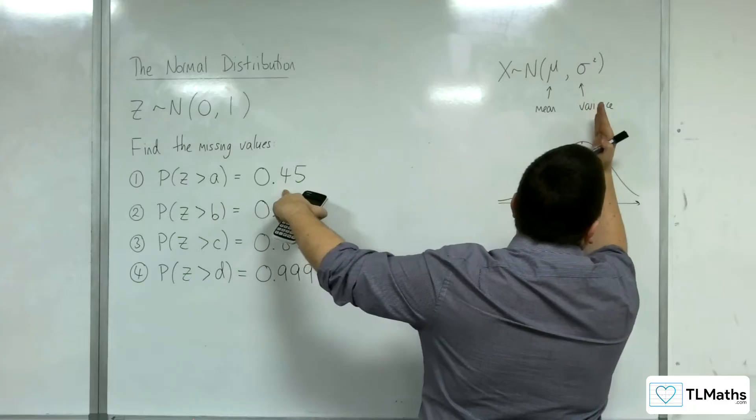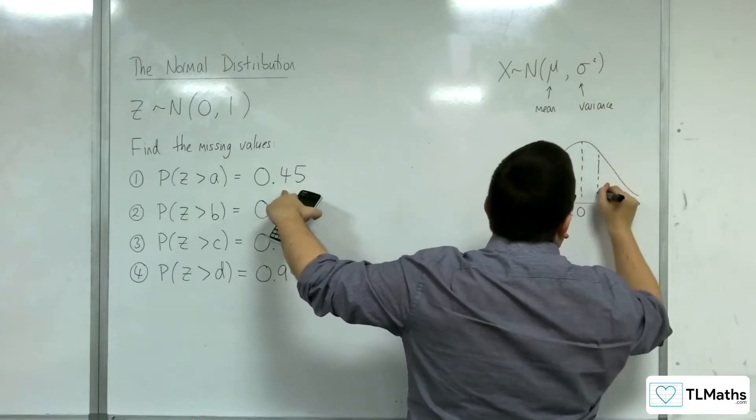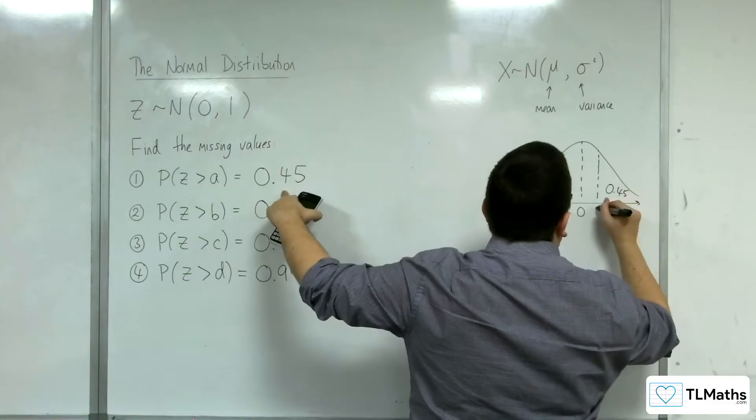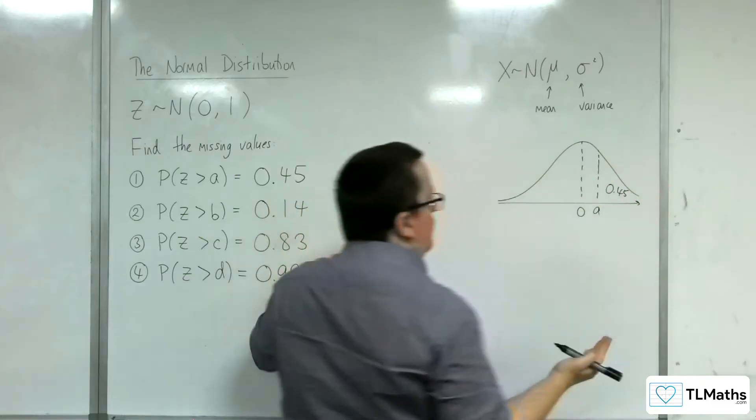Since the area to the right of the mean is 0.5, and 0.45 is less than 0.5, A must be slightly to the right of the mean.